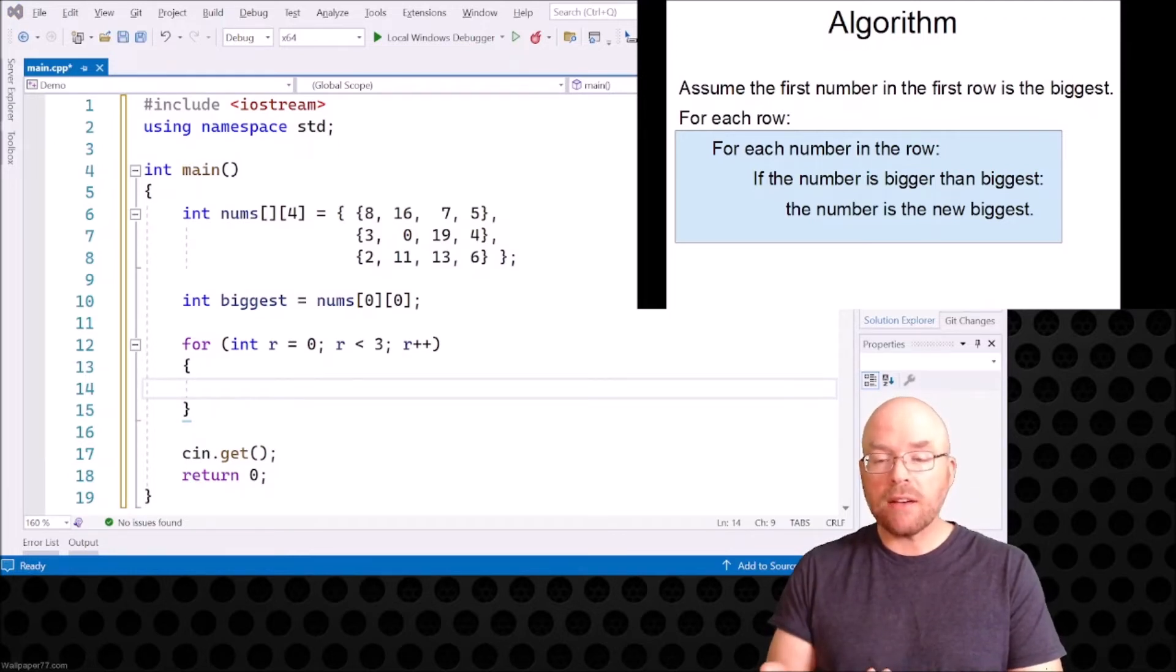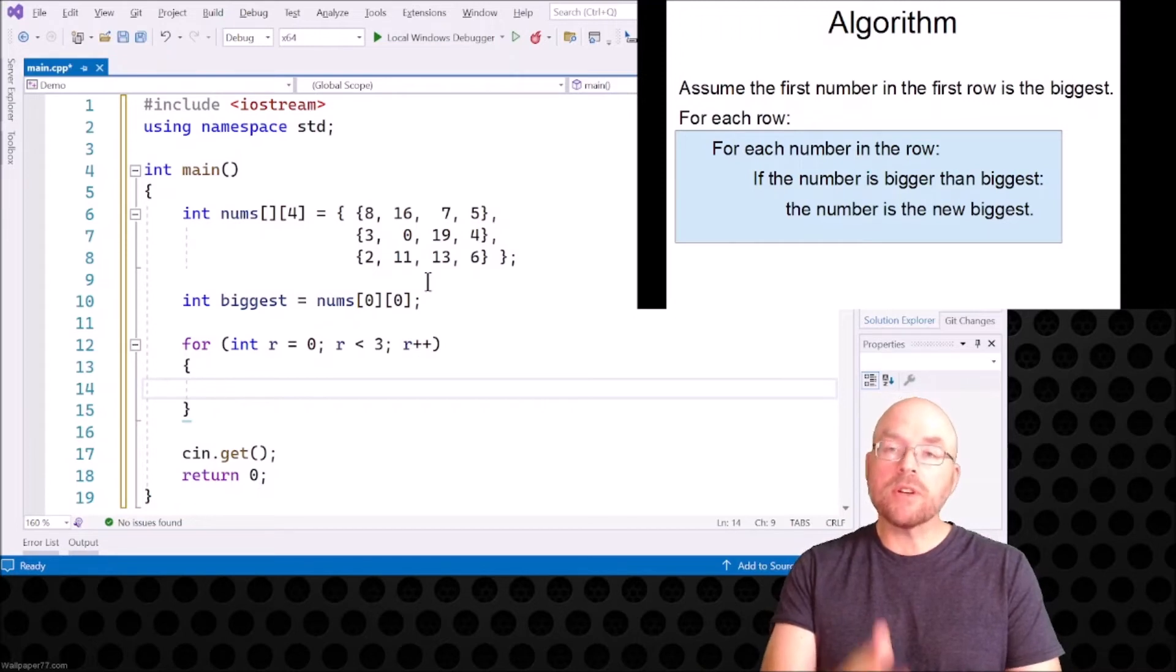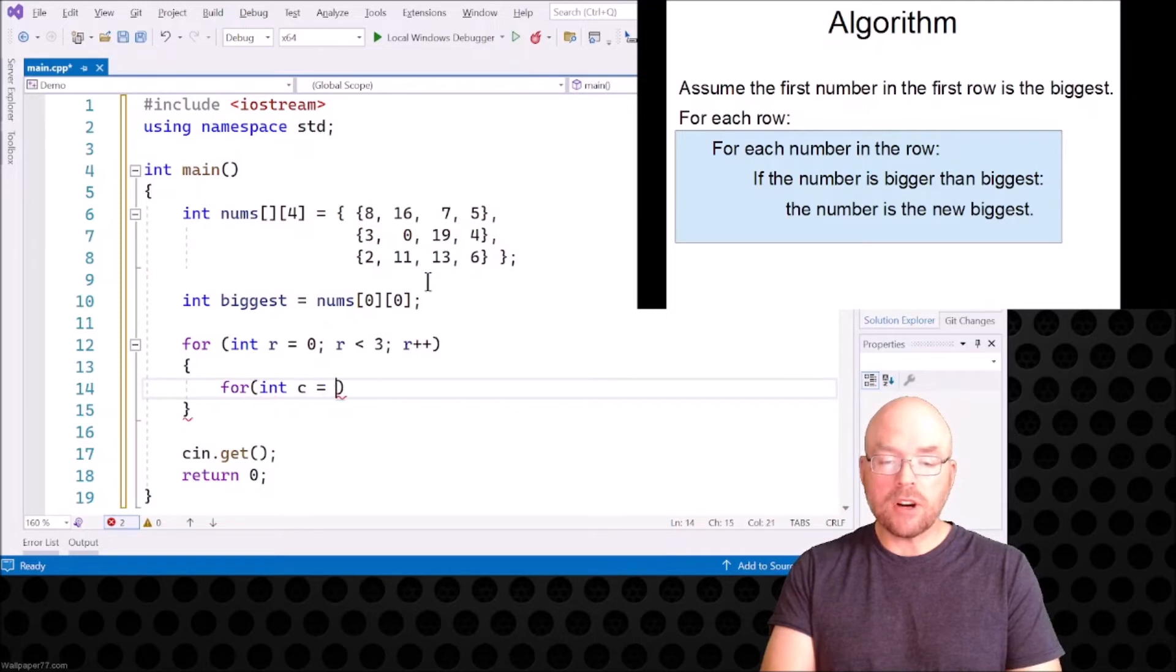Then we had to have an inner loop. We've got nested loops going on here. So that inner loop is for each number in the row. We're moving column by column. So we can do something like this: for int c for column equals zero and c less than, well, how many values are in each row? How many columns are there in each row? There's four. So then we'll say c less than four, c plus plus.